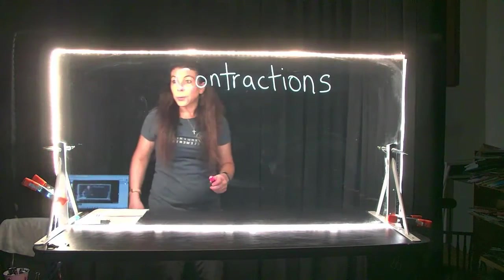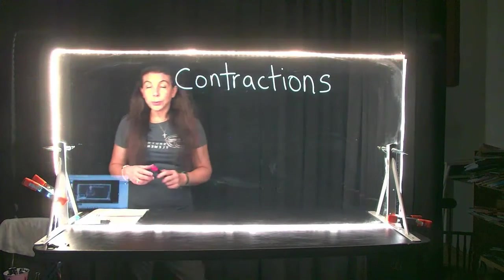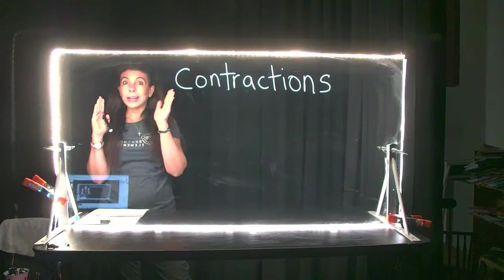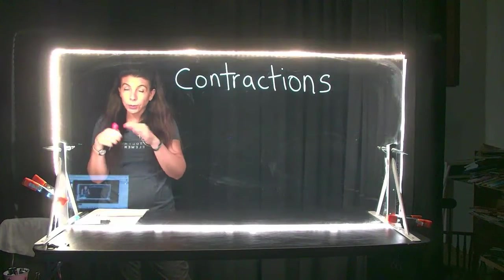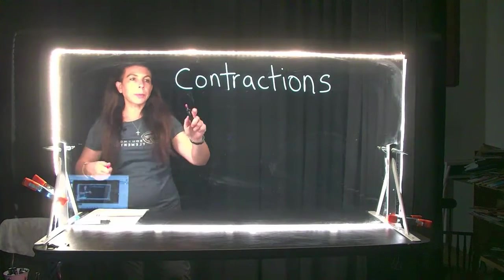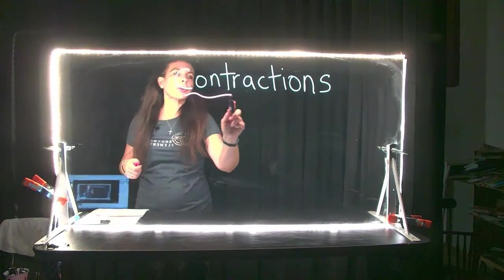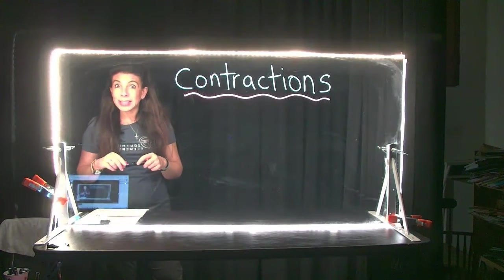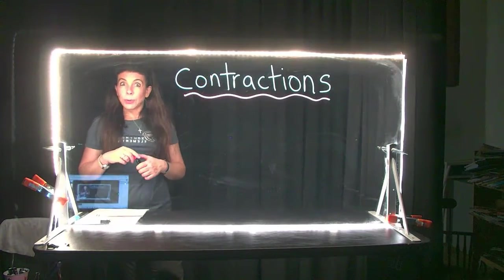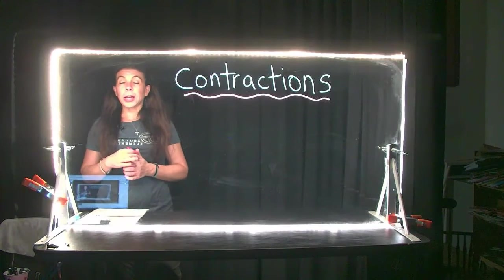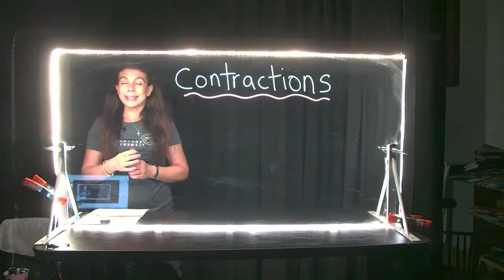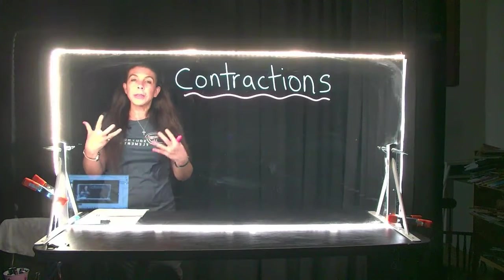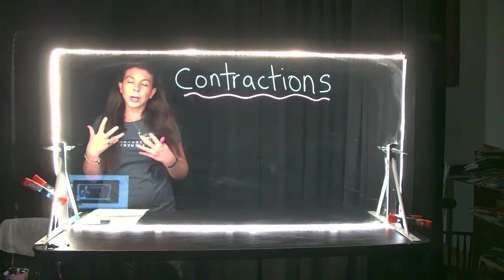Okay, so third grade, we are going to move from unit 3 to unit 11. We're gonna take a big jump and cover contractions. The reason is we have that big state reading test coming up, and there's probably going to be contractions on the state test, so we want to make sure that you know what a contraction is.